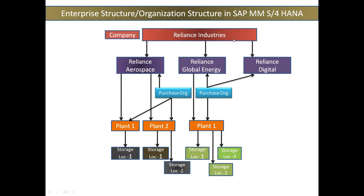For example, Reliance Industries has multiple businesses — I have taken the example of a few: Aerospace, Global Energy, and Digital. So Reliance Aerospace will have different businesses and different product lines. Maybe they are directly buying the product, packing it, and selling it to the customer, or it can be possible that they are buying raw material, manufacturing the product, packing it, and then selling it. It depends on the company and the business.